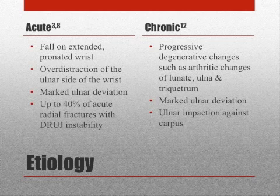Chronic injury mechanisms may include progressive degenerative changes such as arthritic changes in the proximal carpal row, marked ulnar deviation, and ulnar impaction against the carpus, which typically occurs most often in people with positive ulnar variance.